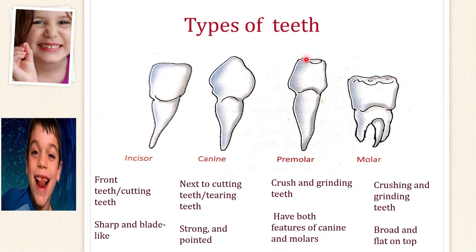Now let's understand types of teeth based on shape, divided into 4 categories: incisor, canine, premolar, and molar. Incisor is also called front teeth or cutting teeth — its shape is sharp and blade-like. Canine is next to the cutting teeth and is also called tearing teeth — it has a strong and pointed structure. Molar is also called crushing and grinding teeth — its shape is broad and flat on top. Premolar is also called crushing and grinding teeth — it has both the features of canine and molar, that is, it is strong and broad on top.